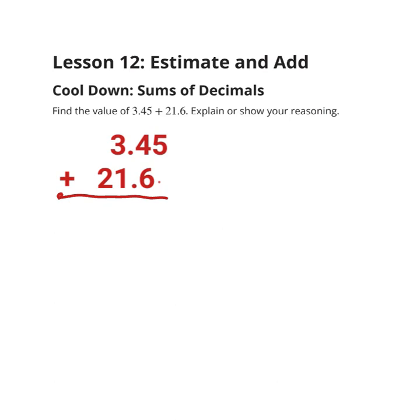Now, I want you to notice that the top decimal is 3 wholes and 45 hundredths, and the bottom one is 21 and 6 tenths. So we're looking at certainly a different number of wholes and a different decimal.